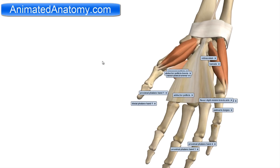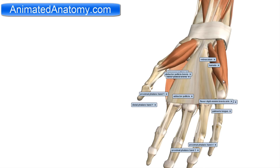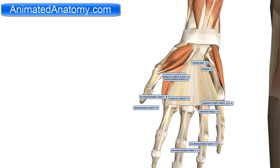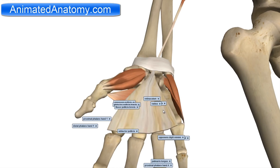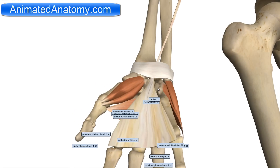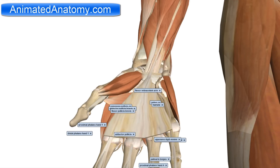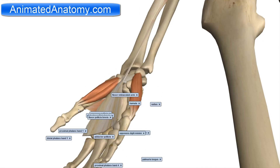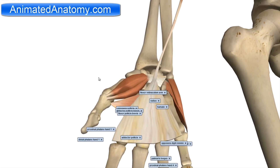The last muscle in this group is the opponens digiti minimi. Just as there is an opponens of the thumb, we now have the opponens of the small finger, shown here. I will remove the flexor of the little finger so we can see the opponens better. For the opposition movement we need to move both the thumb and the little finger. The origin is the hook of the hamate bone and the flexor retinaculum. It inserts on the medial border of the fifth metacarpal bone. It is innervated by the deep branch of the ulnar nerve, C8 and T1, just like the previous muscles.